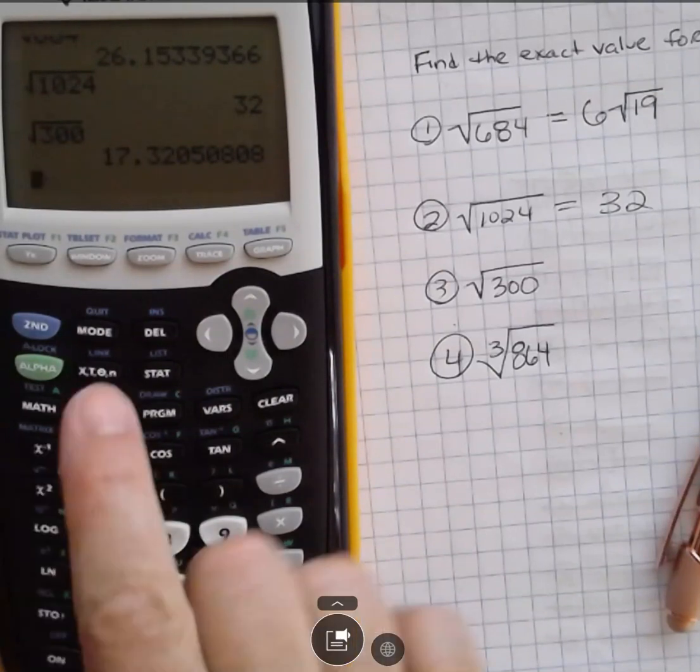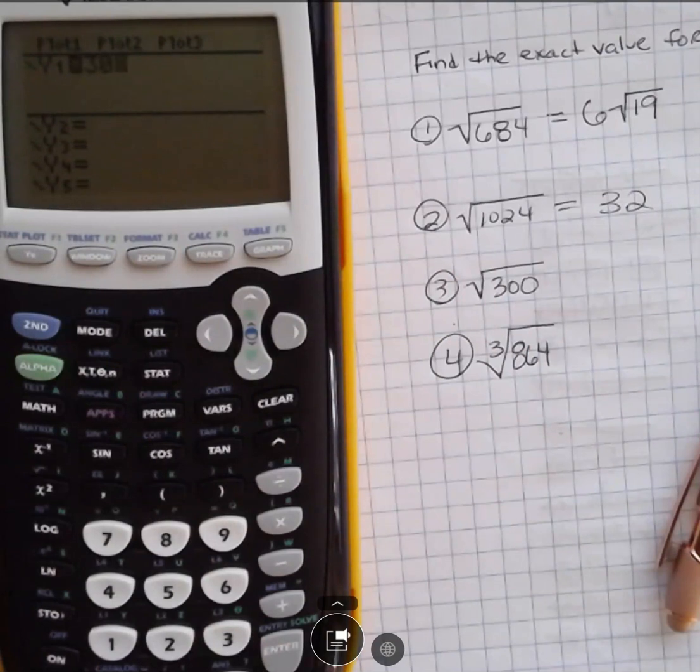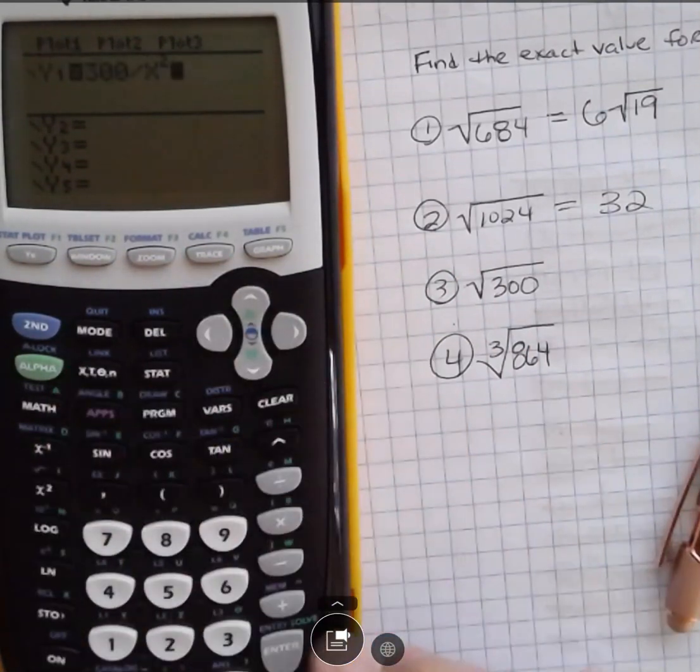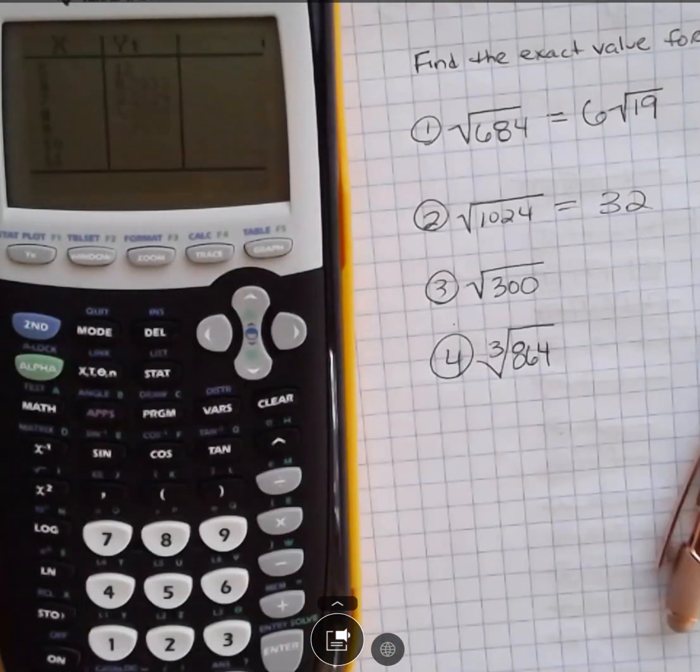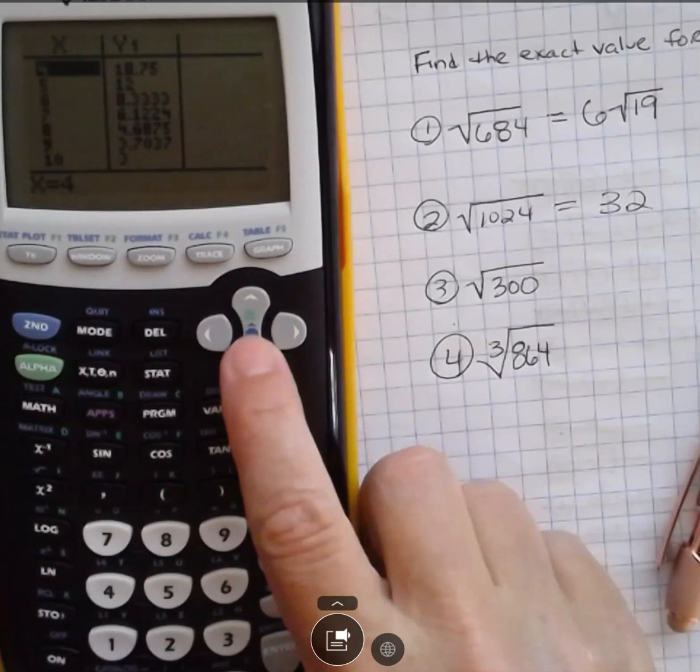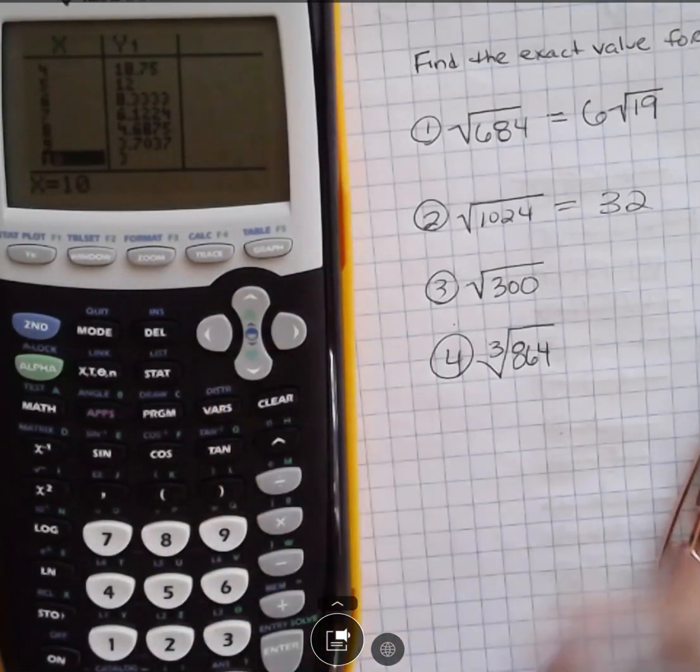It's not a perfect square, so I can go in here, put my y value in. I'm going to put 300 and divide it by x squared and then second function table. And now I can go through and look for that. In this case, you can see I have 5 square root of 12, but I down here have 10 square root of 3.